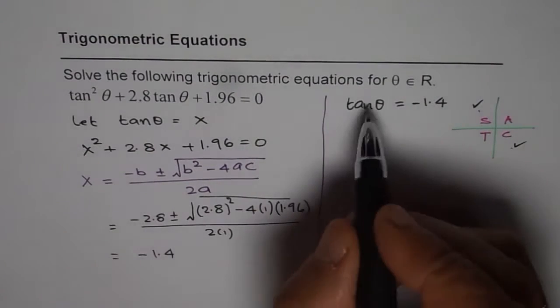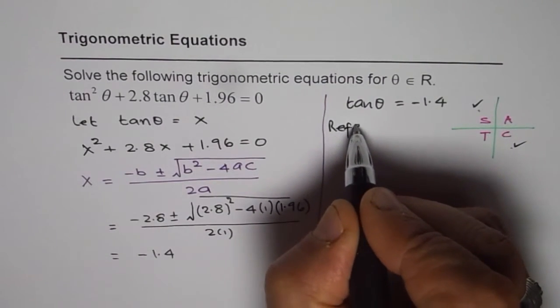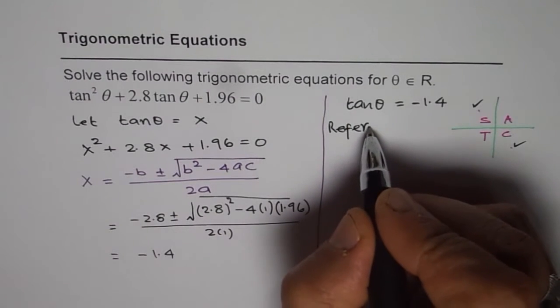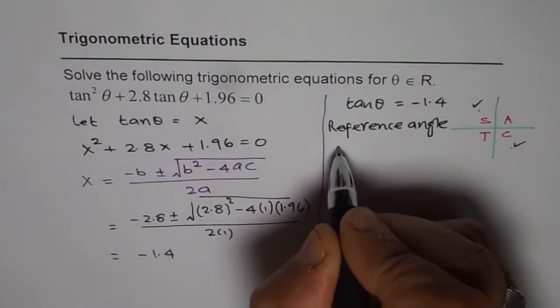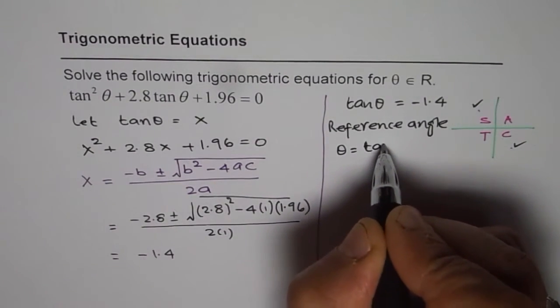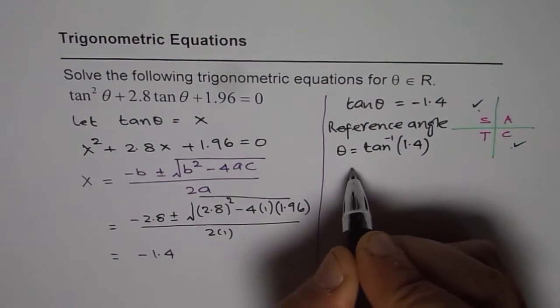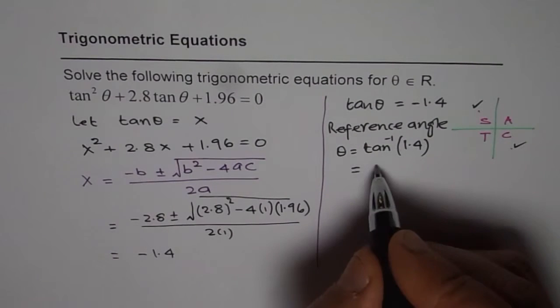So from here first thing is let's find what theta is and we will find the reference angle or sometimes we refer that as relative acute angle. So the reference angle is theta equals to tan inverse. In that case we don't consider the sign we just consider the value. So let's do tan inverse of 1.4. So that gives us value equals to 56.3.